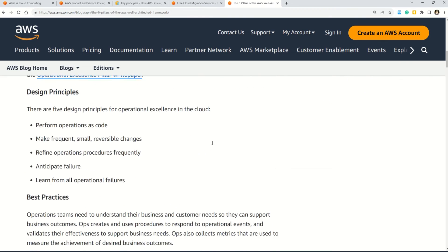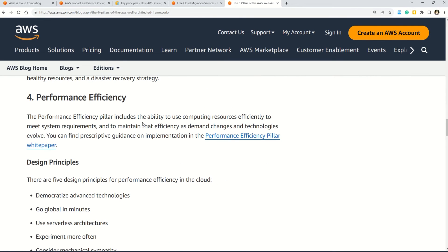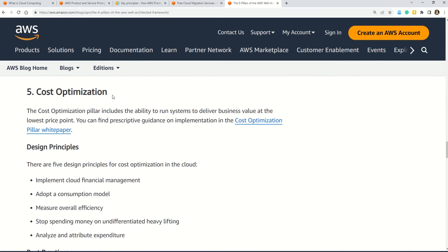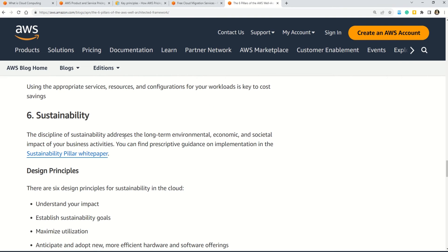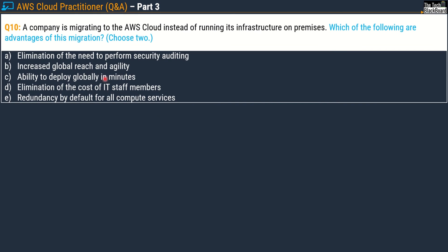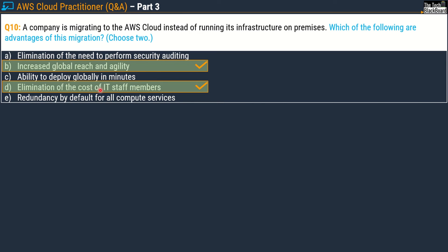Question number ten: a company is migrating to the AWS cloud instead of running its infrastructure on-premises. Which of the following are advantages of this migration? Choose two. Options are: A) elimination of the need to perform security auditing, B) increased global reach and agility, C) ability to deploy globally in minutes, D) elimination of the cost of IT staff members, E) redundancy by default for all compute services. The correct answers are Option B, increased global reach and agility, and Option D, elimination of the cost of IT staff members.